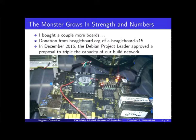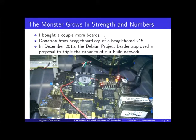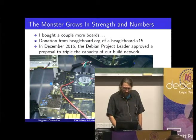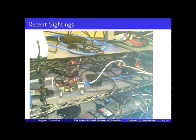So I bought a couple more boards and got some donations — I solicited some, got one from BeagleBoard. And then Holger was like, 'Vagrant, are you buying all these boards yourself?' I said yeah. Holger helped by soliciting a donation from the DPL, and we wrote up a proposal to double or triple the capacity of our build network. The picture is an example of a BeagleBoard X15, one of the ones donated, but the majority of our network got built out from Debian funds. This is basically what it looks like — just cables everywhere. Cable management is not my strength, but even if it was, it's a lot of cables.